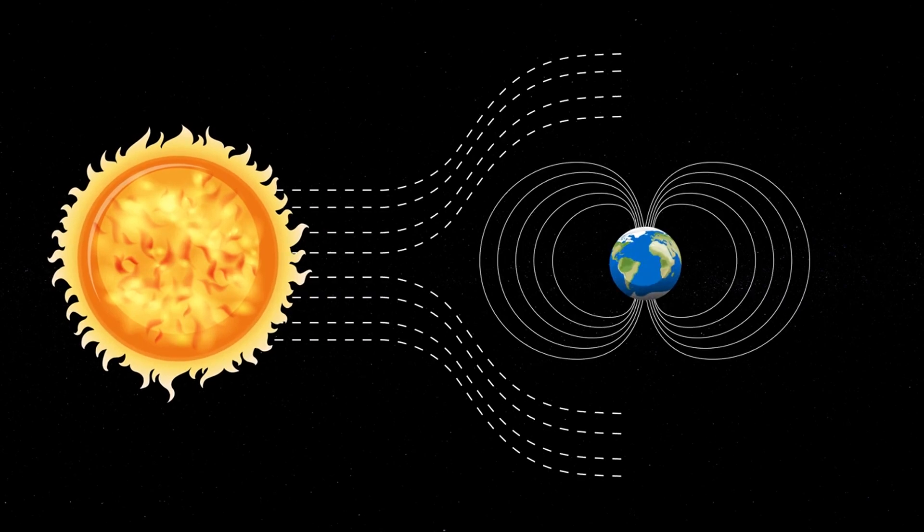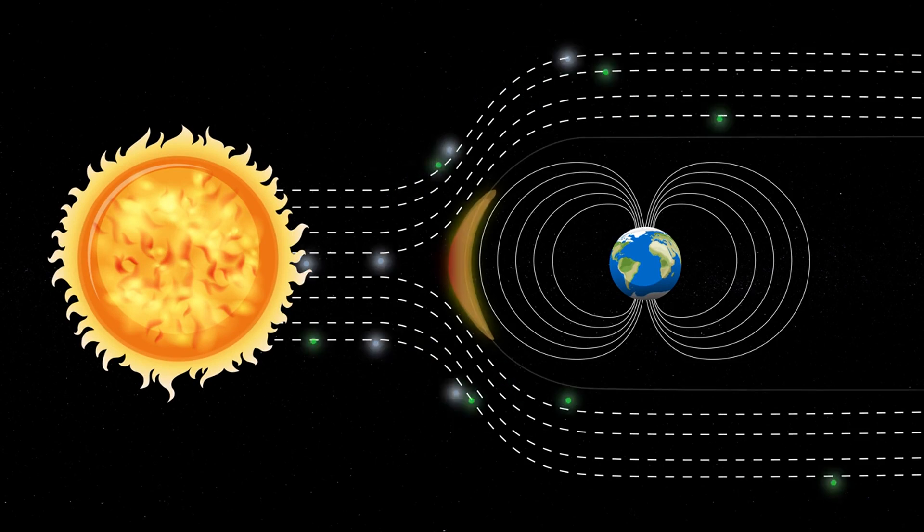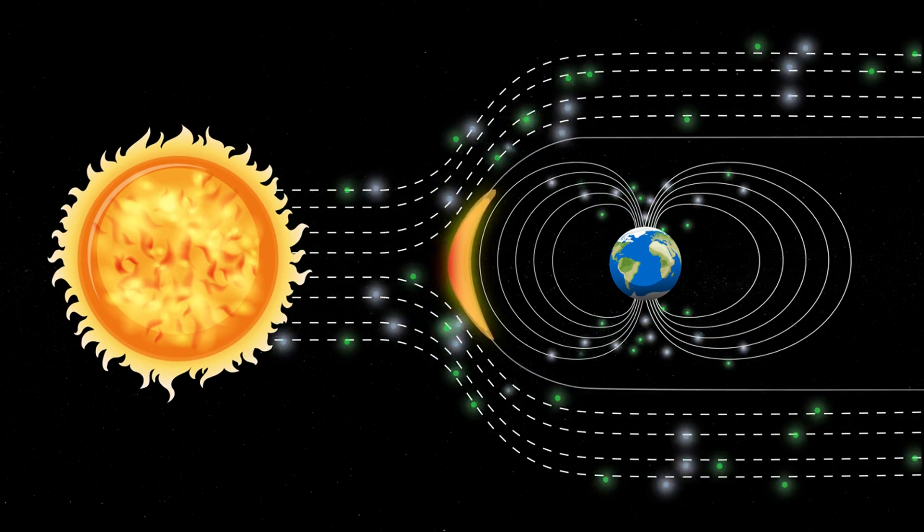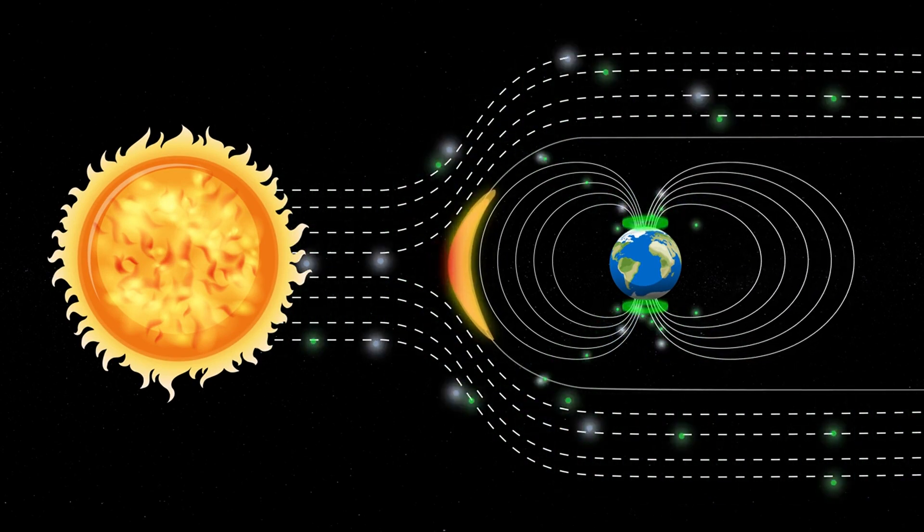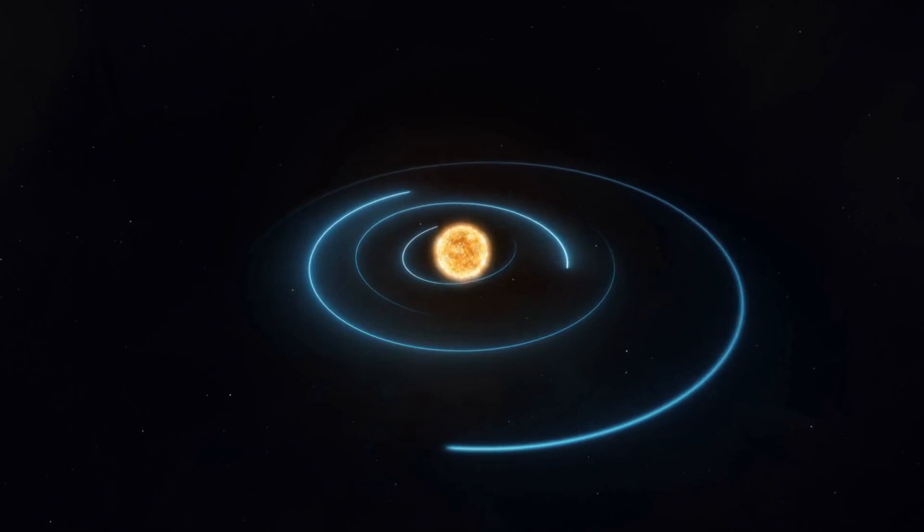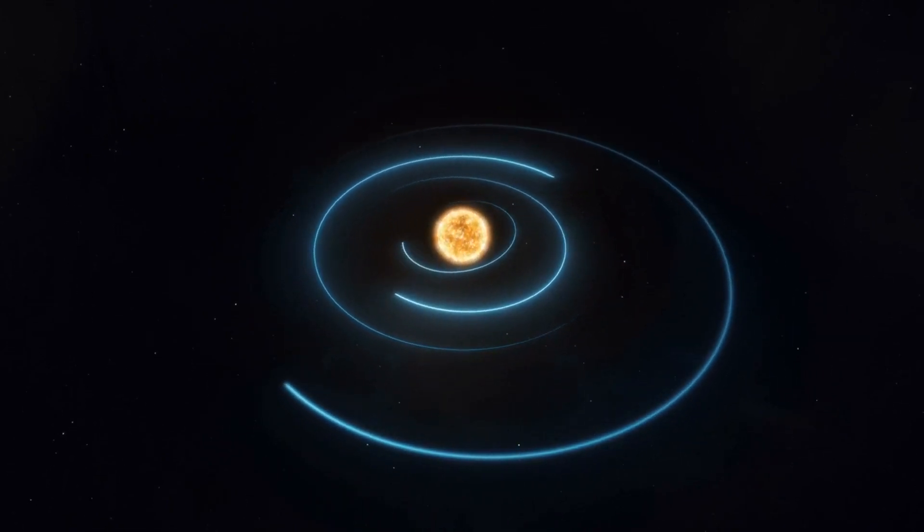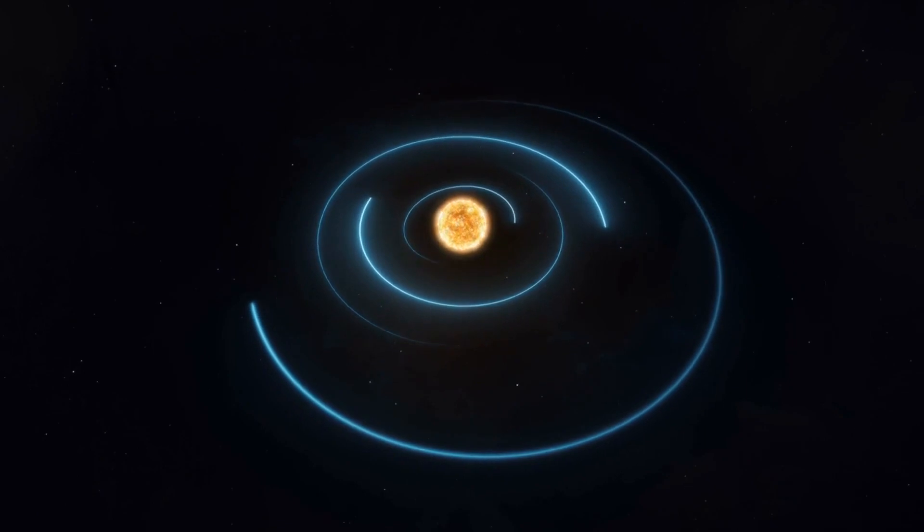Solar wind conditions have returned to baseline. The wind speed has gracefully eased from 425 to 350 kilometers per second. The total field strength has been dancing between 1 to 7 nT, with BZ mostly pointing north.